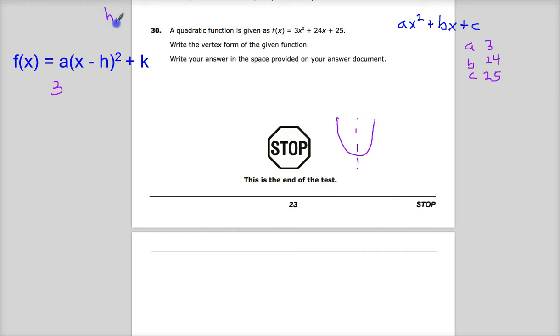So, I'm going to do negative B over 2 times A. Negative B is negative 24. 2 times A is 2 times 3. Negative 24 and 6. So, I end up with negative 4 as my x component. So, my h value here would be negative 4.